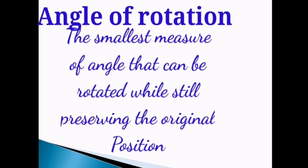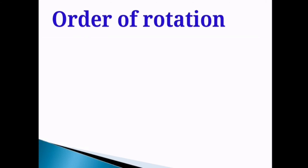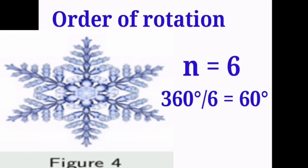Angle of rotation. The small measure of angle that the figure can be rotated while still preserving the original position. Order of rotation. A figure has a rotational symmetry of order N. If 1 over N of a complete turn leaves the figure unchanged. To compute for the angle of rotation, we use the formula angle of rotation is equal to 360 degrees over N. Let's have another example. We have here the snowflakes. Snowflakes have 6 folds. Now, we can get the angle of rotation by simply using the formula 360 over N. We substitute 6 to N. So, we have 360 divided by 6. We got 60 degrees.